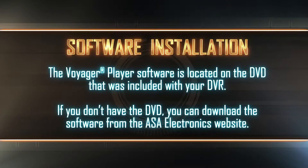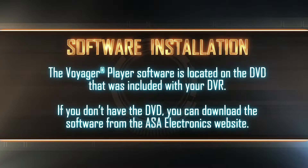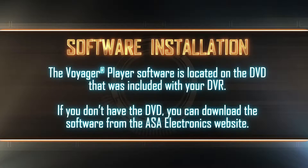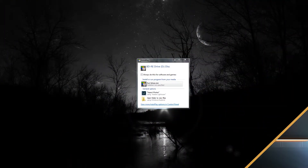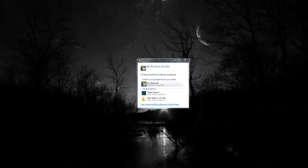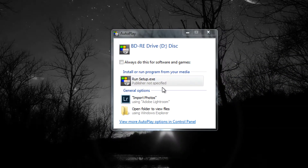The Voyager Player software is located on the DVD that was included with your DVR. If you don't have the DVD, you can download the software from the ASA Electronics website. With the DVD inserted, or with the file downloaded, click Setup.exe.